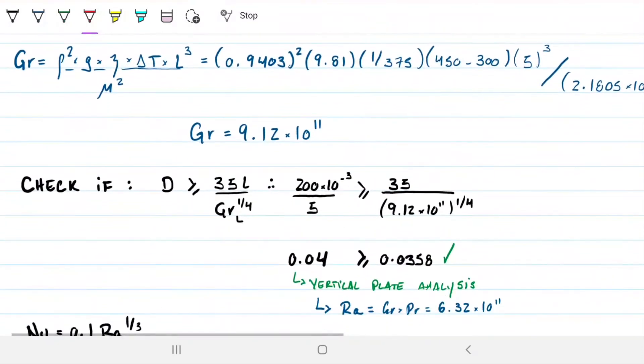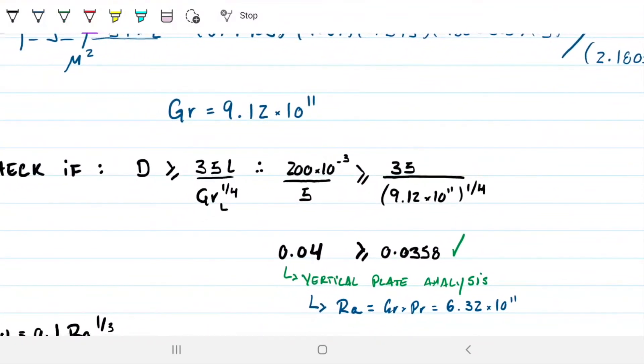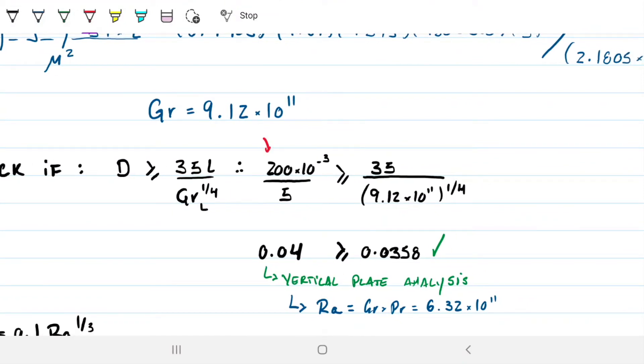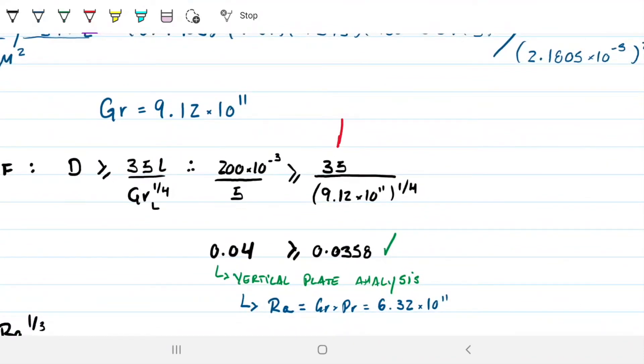Beta will just be one over T fluid in Kelvin. So in this case, we have decided our T fluid for the property would be 375, so this could be one over 375. Just remember, this has to be in Kelvin. If you remember that, you're safe. So here's a calculation for Grashoff. Density squared, gravity, assuming we're on Earth, one over T fluid, difference in temperature, my height, in meters to the third, and then the dynamic viscosity squared. Okay, I got this to be 9.12 times 10 to the 11th, and then what we do is we check if the condition is met.